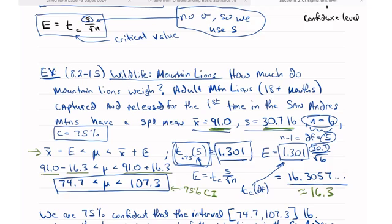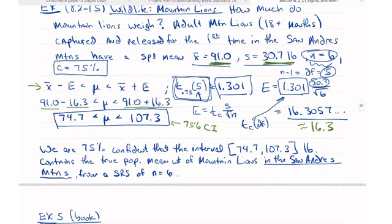The important part here is the interpretation. So, the underlined portion is what we need to fill in. All right. So, we are 75% confident. This is c, our confidence level. That the interval, this is our CI, 74.7 to 107.3.